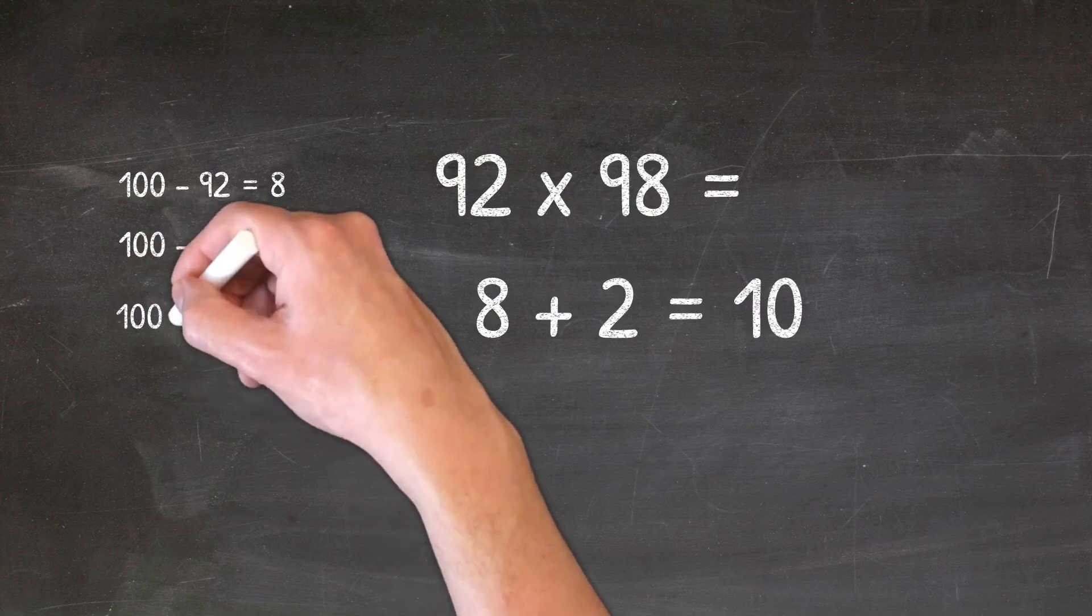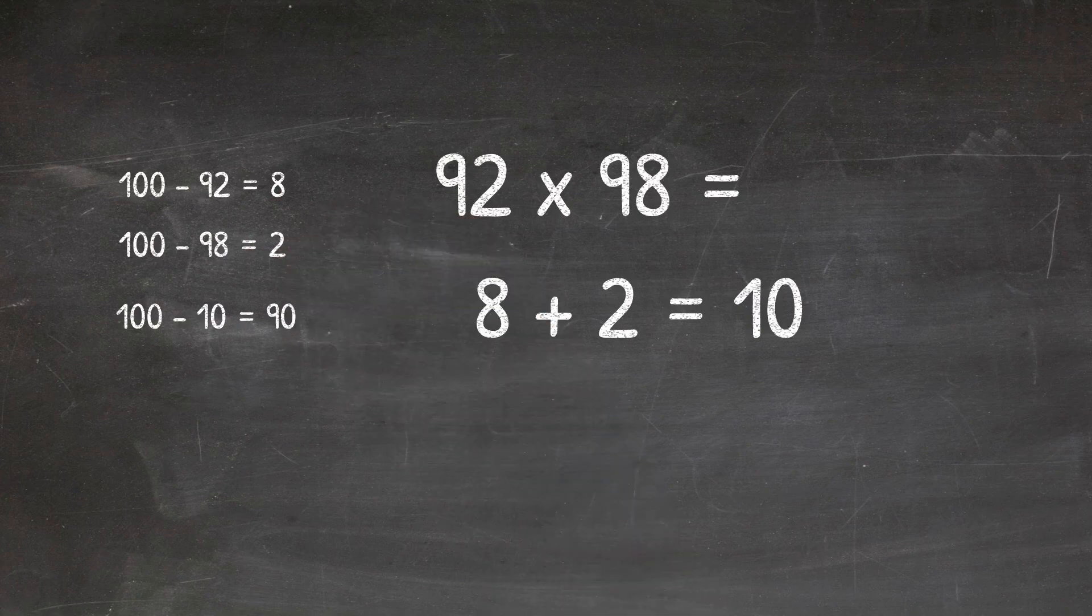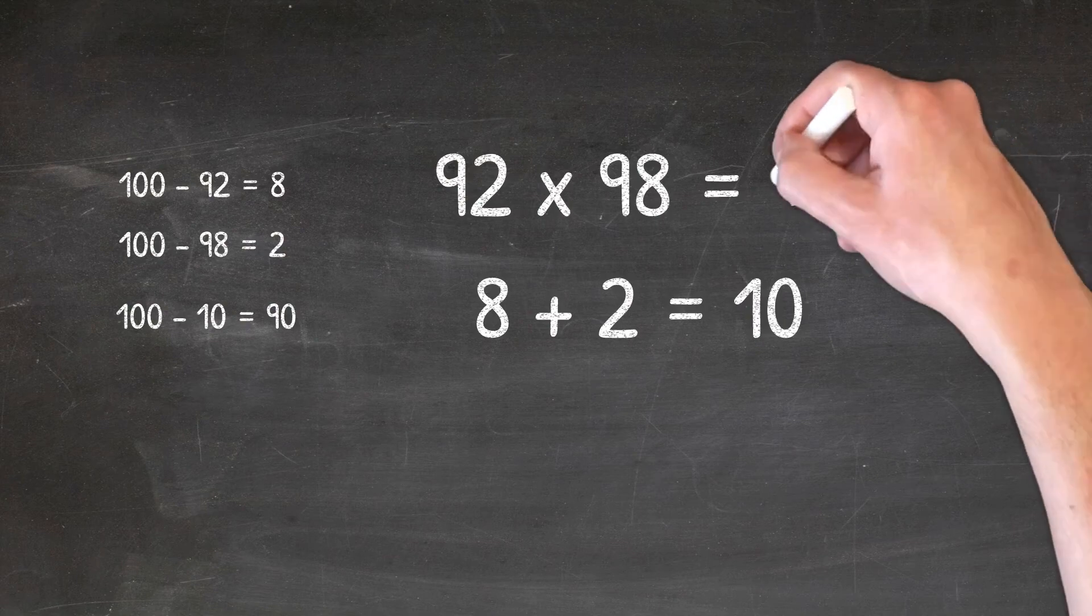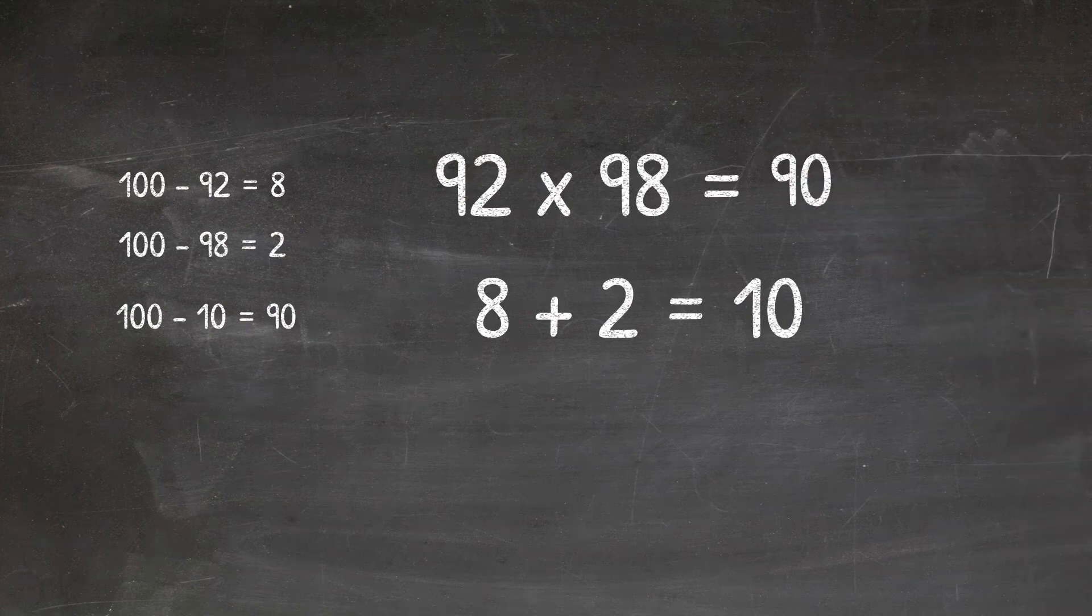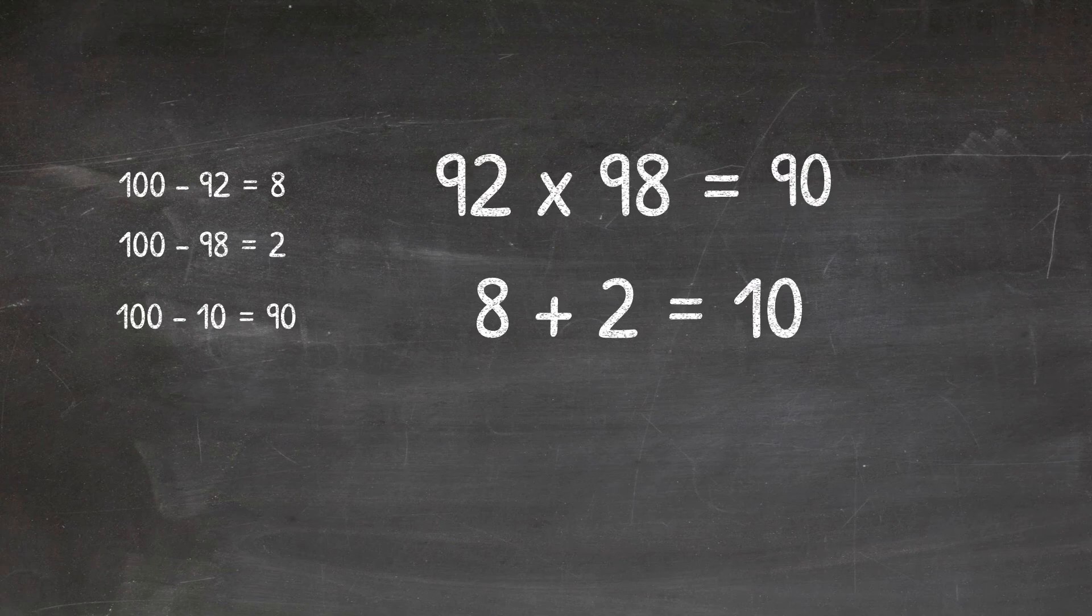Now like our previous two numbers, we're going to take this 10 and minus it from 100. So this gives us the value of 90. Now something magical just happened here because this is the first two digits of our answer of 92 times 98.